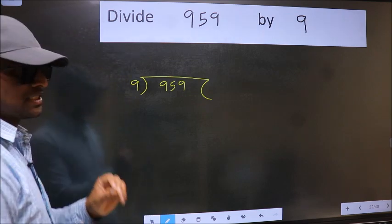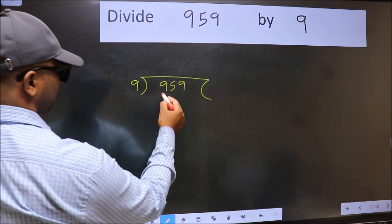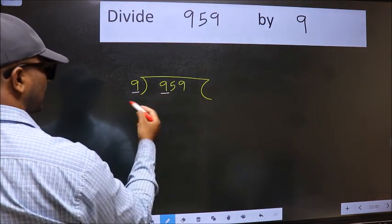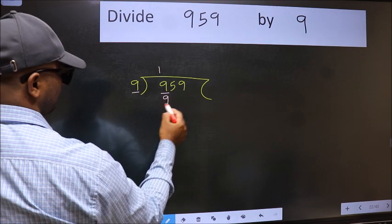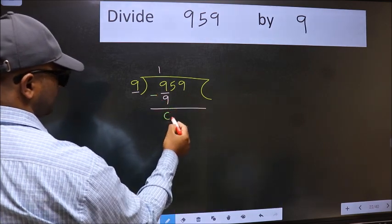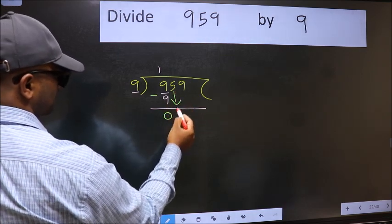This is your step one. Next, here we have 9 and here 9. When do we get 9 in the 9 times table? 9 once is 9. Now we should subtract, we get zero. After this, bring down the beside number, so 5 down.